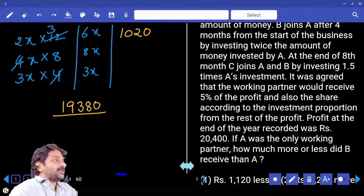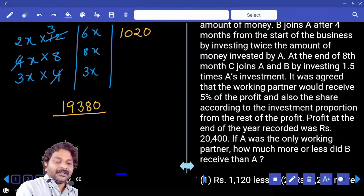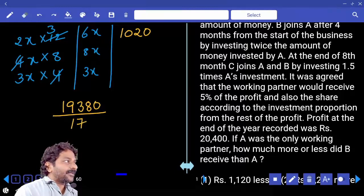Let me first calculate how much is those 2 parts value. Correct? This must be divided into 17 parts and B is getting extra 2 parts.